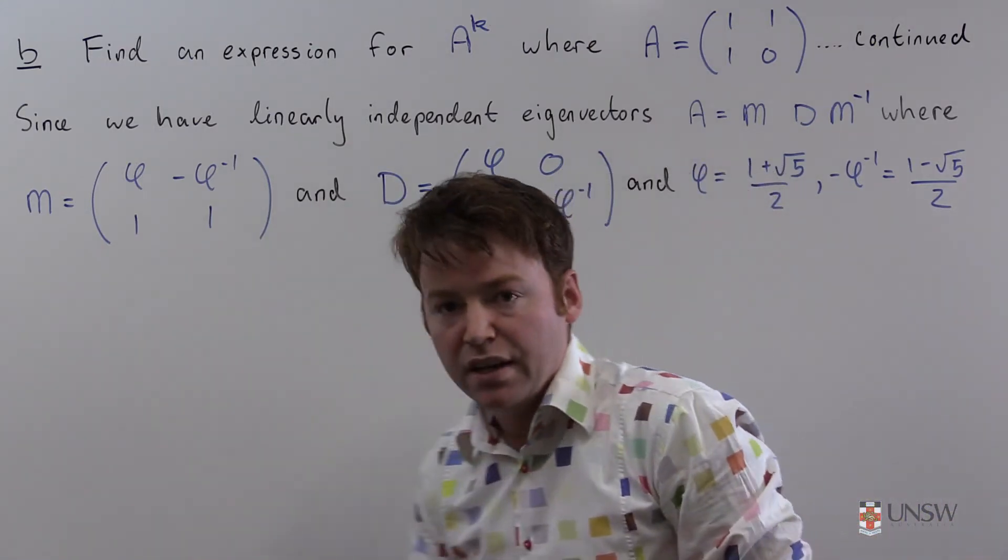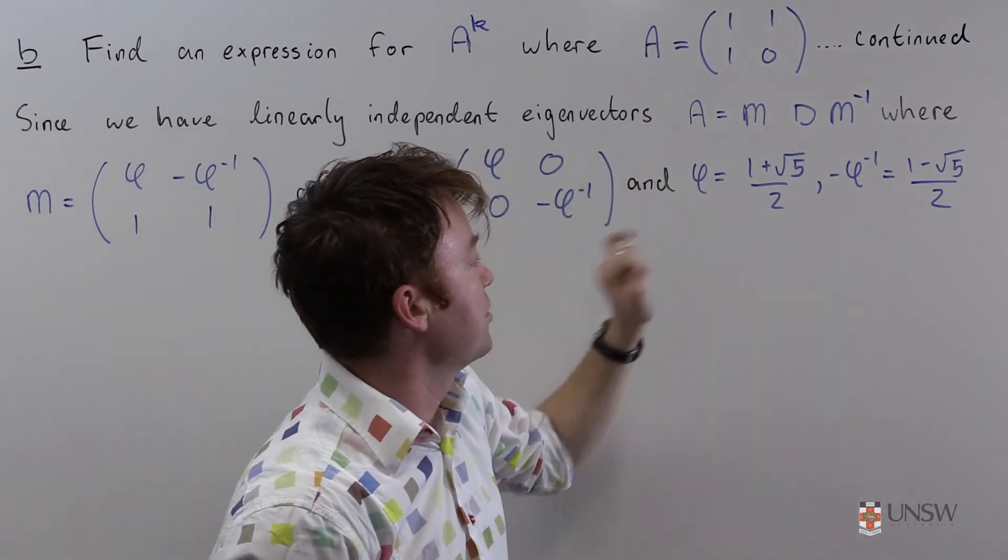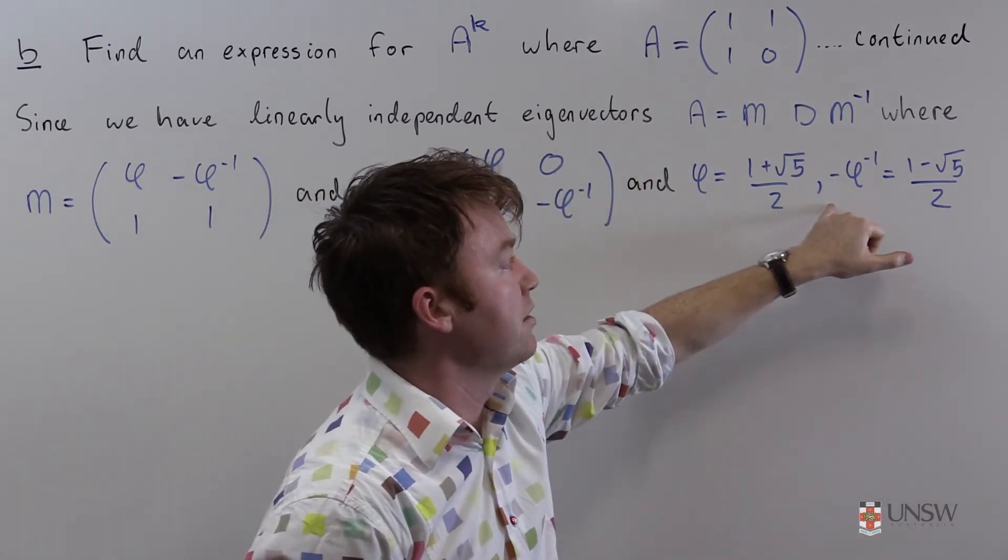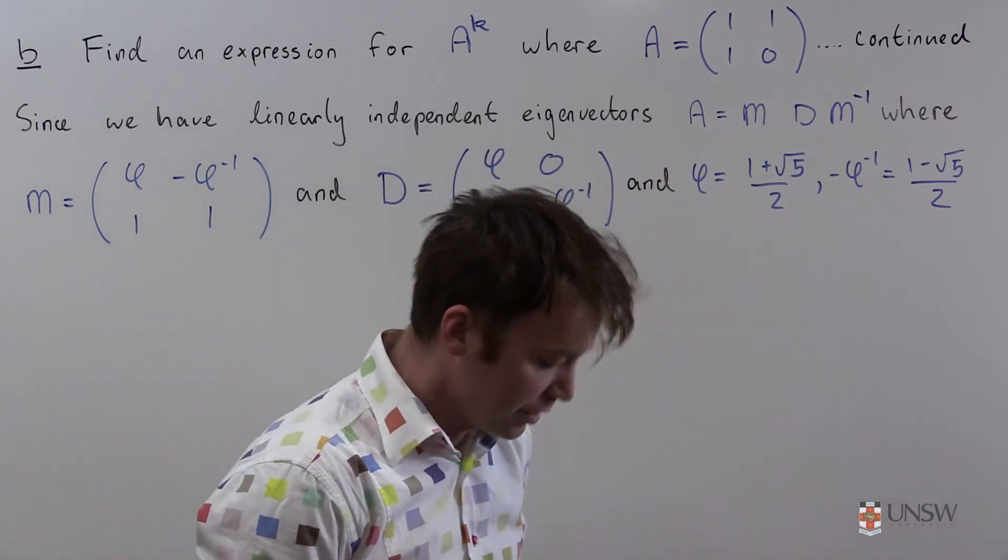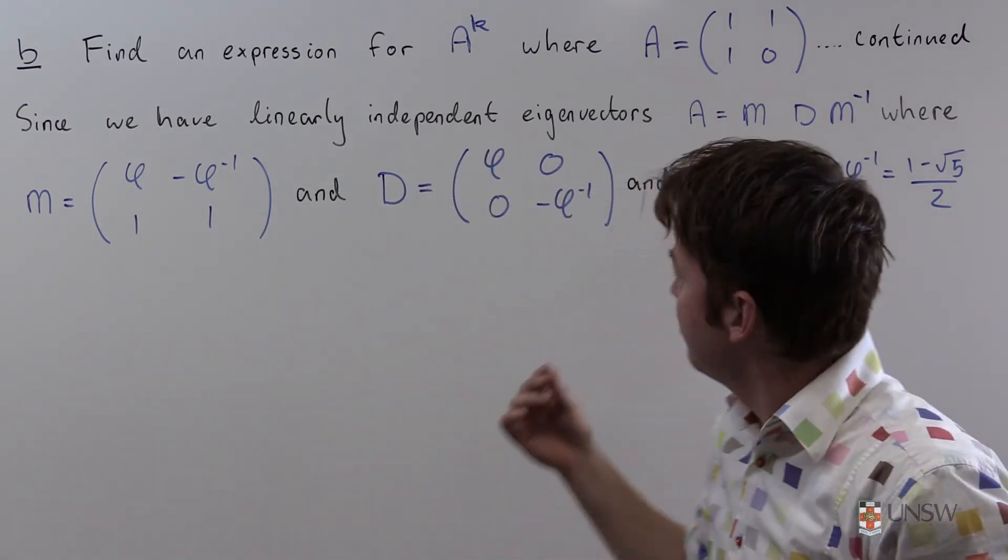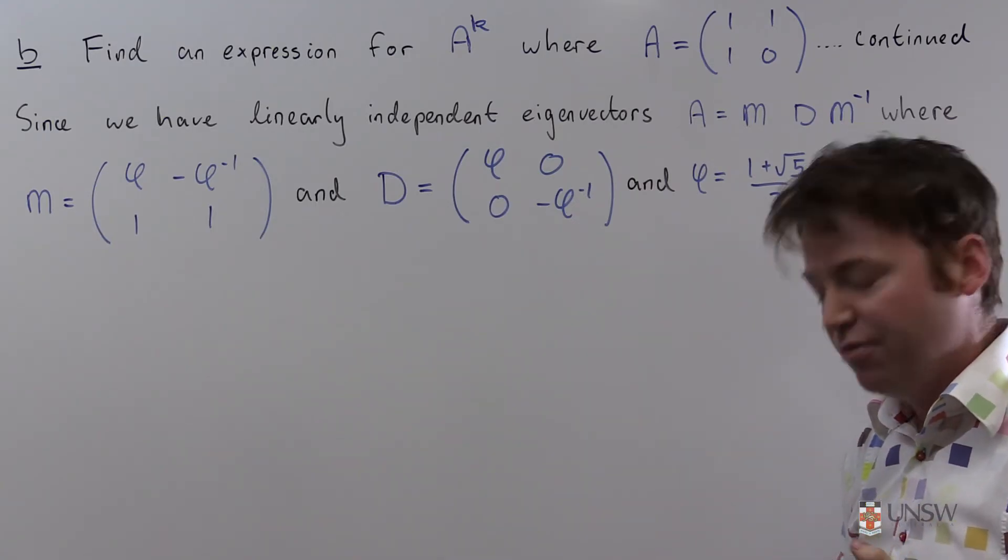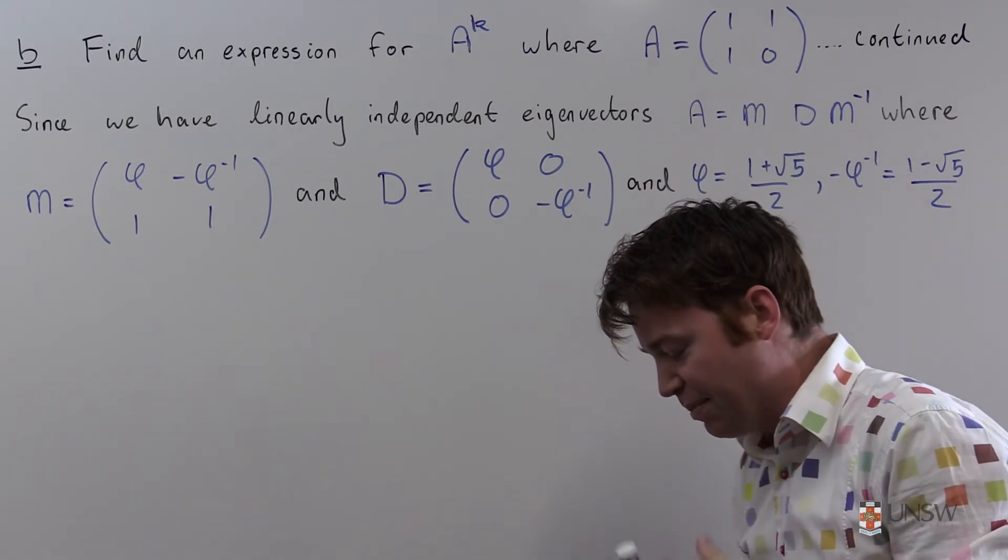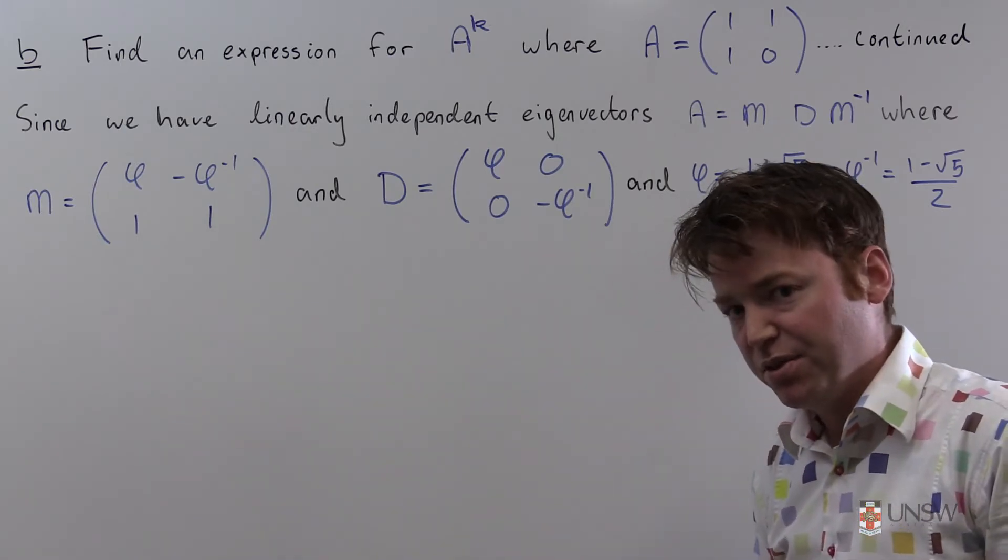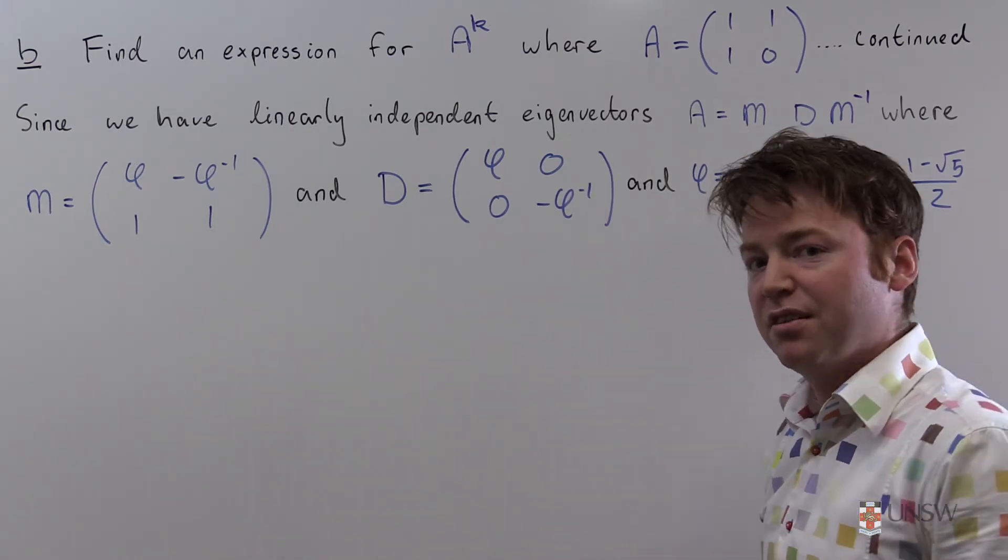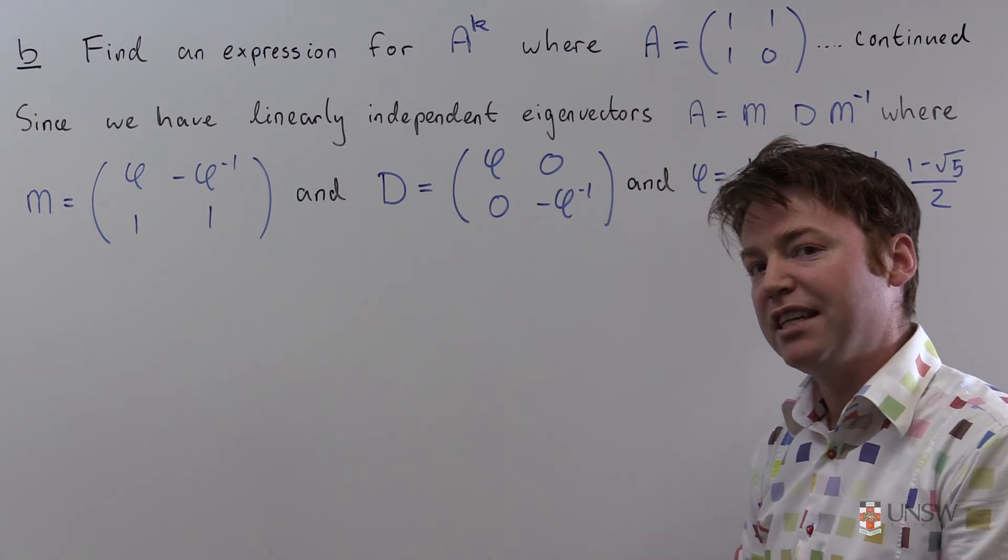Now order is important. And I've just written up what φ was, the golden ratio, and negative the reciprocal of the golden ratio here. And writing it in this way is very special, because it allows us to take powers quite easily. Recall, it's quite a laborious process to take the power of a matrix. Not so for a diagonal matrix though. Powers of a diagonal matrix are really easy to find.